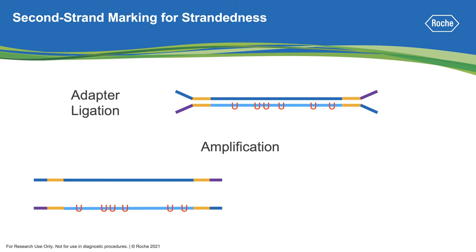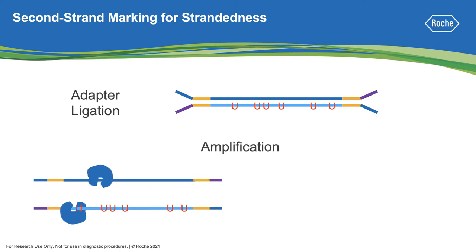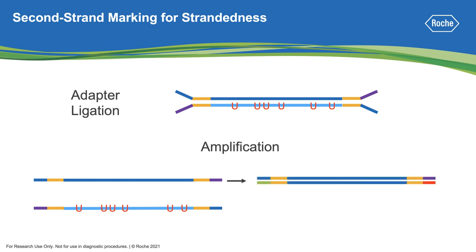After the sample is denatured during PCR cycling, the polymerase will complete the first strand; however, it will stall at the uracils on the second strand. This allows the completion of amplification of the first strand, while the second strand fails to convert into a double-stranded library.